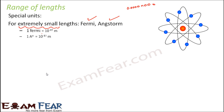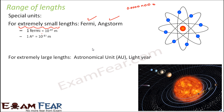Similarly, 1 Angstrom is equal to 10 to the power of minus 10 meters. These are extremely small units and are therefore called special units. We will not deal with these special units in detail right now — this is just for your information. The range of length is quite huge: we have lengths that are very very small, and we have lengths that are very very large.